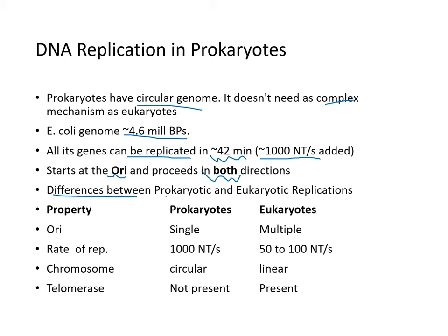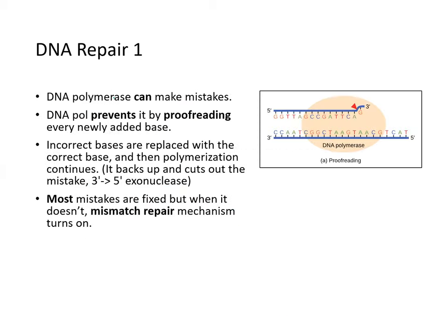Comparing prokaryotic and eukaryotic replication: prokaryotes have a single origin of replication, eukaryotes use multiple. Prokaryotes replicate at about 1,000 nucleotides per second; eukaryotes at about 50 to 100 nucleotides per second. Prokaryote chromosomes are circular; eukaryote chromosomes are linear. Telomerase is absent in prokaryotes but present in certain eukaryotic cells.